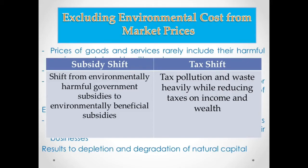By imposing high taxes on pollution and waste, the government will benefit, and companies and factories causing environmental pollution will be taxed heavily. This will likely result in less dumping of chemical waste and less pollution in the environment. That is what we call the tax shift.